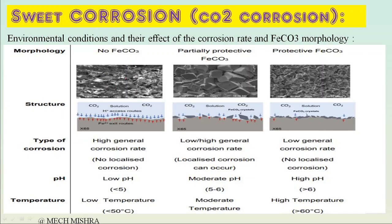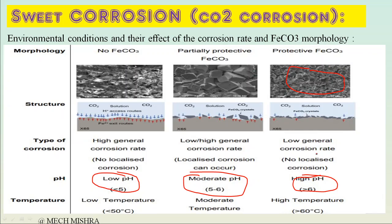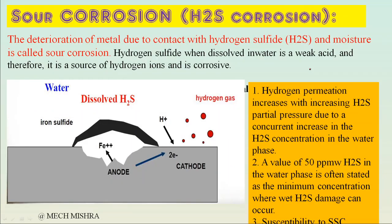To summarize the pH conditions: in the unsaturated case pH is below 5; in the partially saturated case pH is moderate at 5 to 6; and in the supersaturated case where a stable protective FeCO3 film forms, pH is above 6, CO2 level is lower, and the FeCO3 crystals are more stable. These are the environmental conditions that affect FeCO3 corrosion behavior.